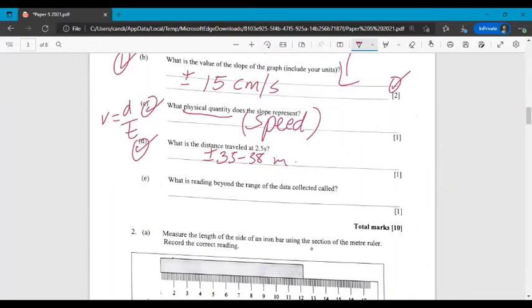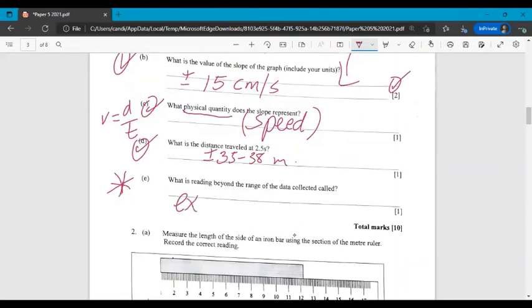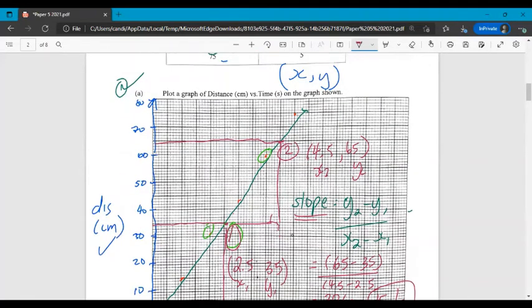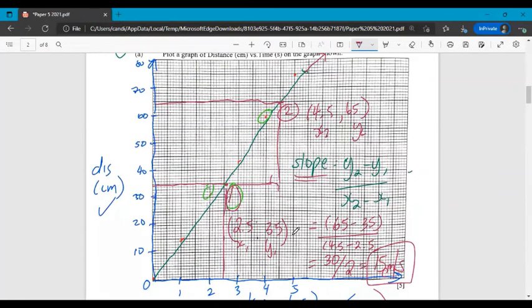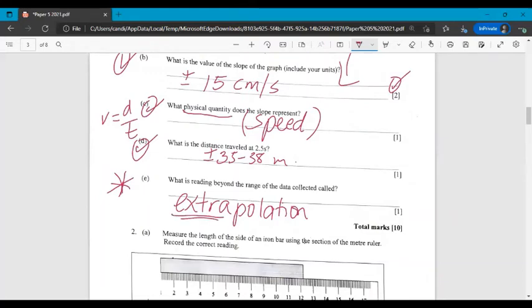Part E. What is the reading beyond the range of the data collected called? So put a star next to this one. This might be a new word for some of you. And it's a technique in data analysis that's called extrapolation. And it basically means extending the graph beyond where we have data and assuming that the trend continues. So let's say I decided to extend this graph a little and I wanted to know what was the distance traveled at 6 centimeters. I don't actually have that data, but I can extrapolate it. I can extend my graph, extend the line, and then I can find out that the distance traveled is somewhere about 80 meters, 80 centimeters. That's extrapolation. So think extra or extend.